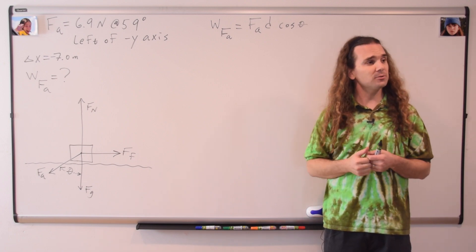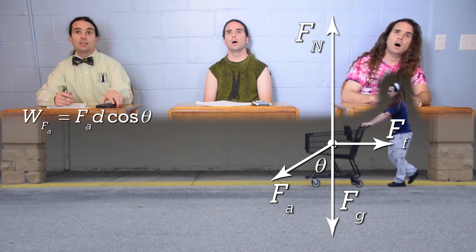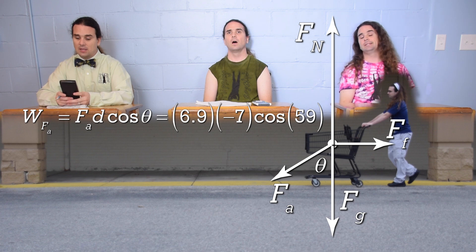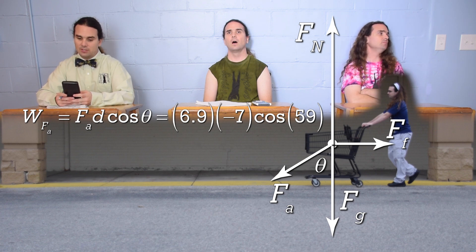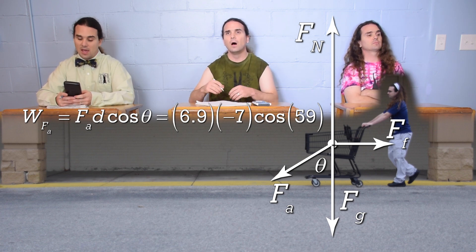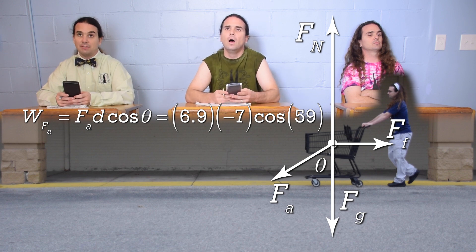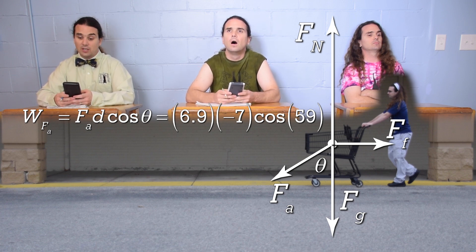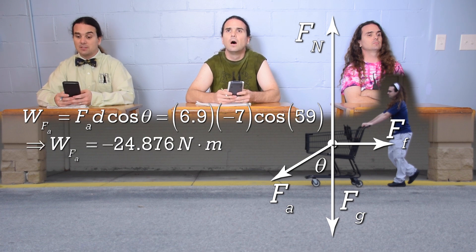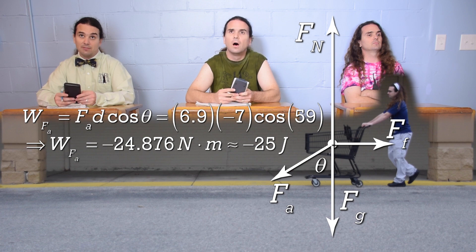Mr. P: Billy, could you please substitute in values? The force applied is 6.9 times the displacement, which is negative 7, times the angle theta, which is 59 degrees, times the cosine of 59 degrees, which is negative 24.876 newton meters, or with sig figs, negative 25 joules.